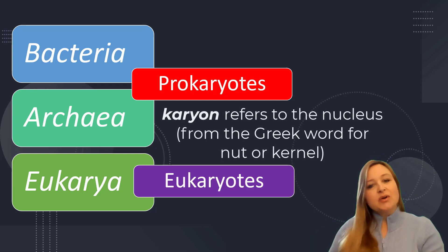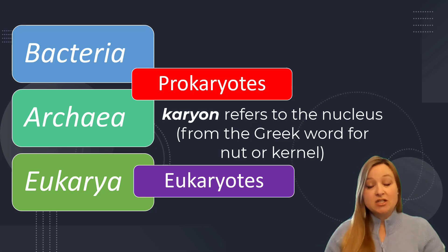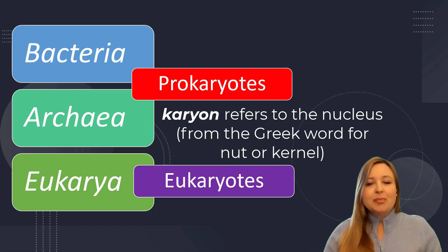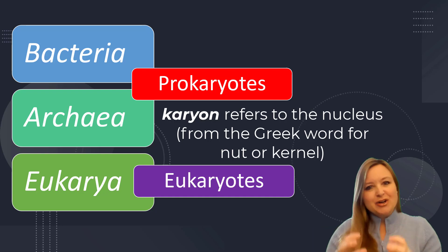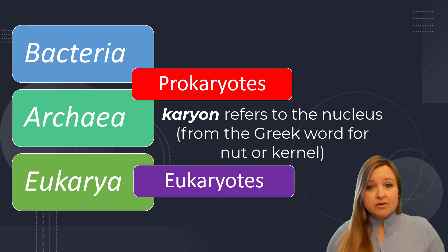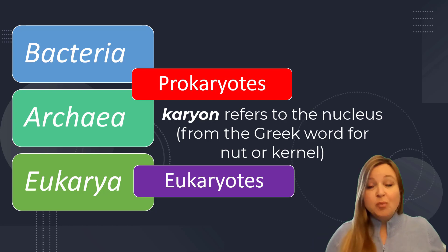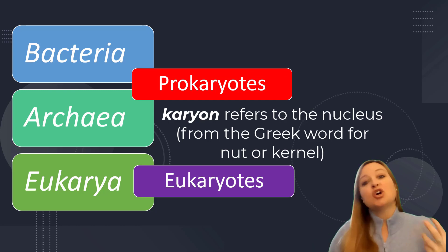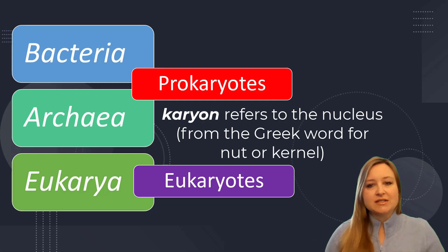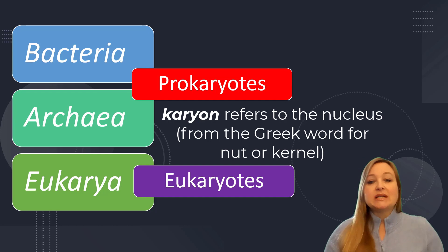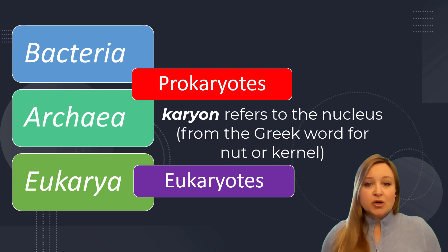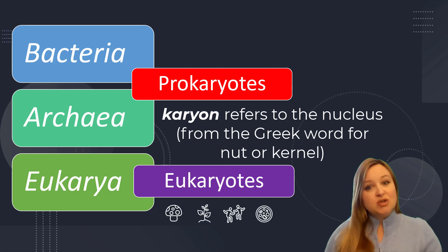The word karyote or karyon, we use that in biology a lot to refer to the nucleus. The origin is nut or kernel, but in biology we mean that nut or kernel to be the nucleus. So prokaryotes are those organisms that were around before — that's the 'pro' part — before the organisms that had a nucleus. So these are the earlier evolutionary organisms. Eukaryotes, on the other hand — 'eu' means true — so these are the ones that have a true nucleus.